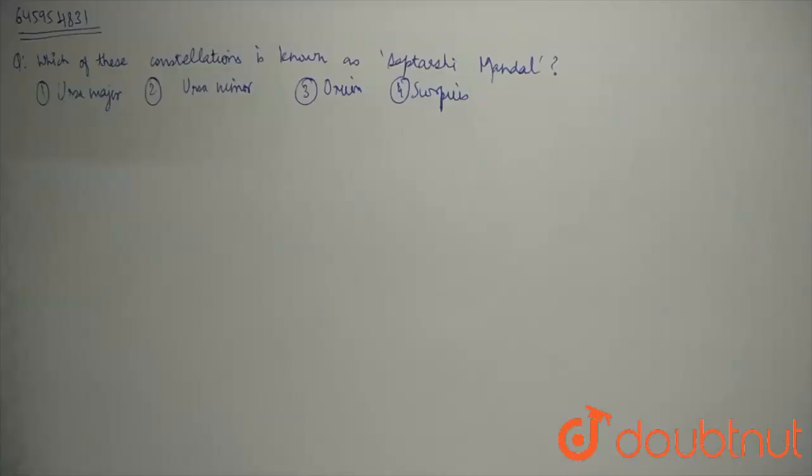Which of these constellations is known as Saptarishi Mandal? So, the answer is Ursa Major. Ursa Major is known as Saptarishi Mandal or Big Bear.